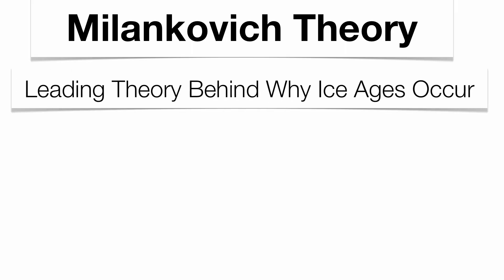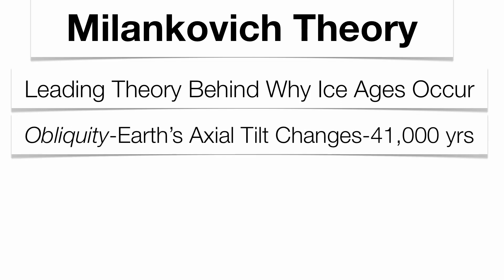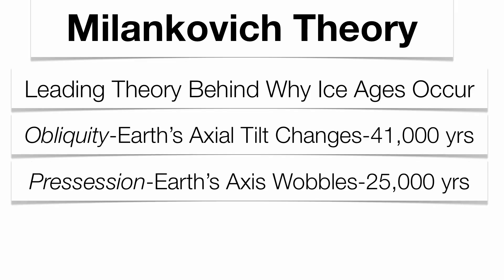Now, there's no real understanding about why we have these ice ages, but Milutin Milankovitch came up with a three-part theory, which is the leading theory behind why we think the ice ages occur. The first one is what we call obliquity, which means the axial tilt of the planet changes from 22 degrees to about 24 degrees every 41,000 years. That will ultimately change the amount of insolation on the planet.